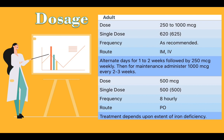The dose is 500 micrograms. Single dose is 500. The frequency is 8 hourly. The route is PO. Treatment depends upon the extent of iron deficiency.